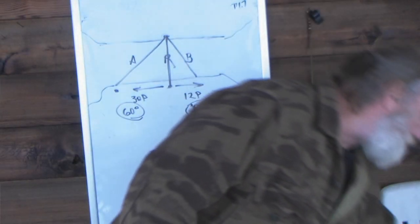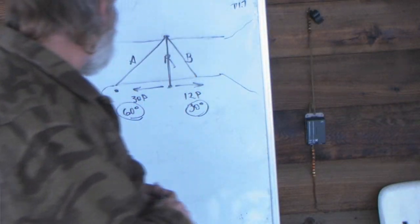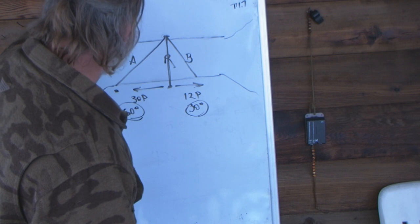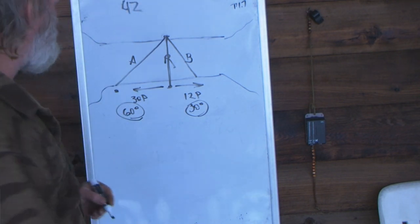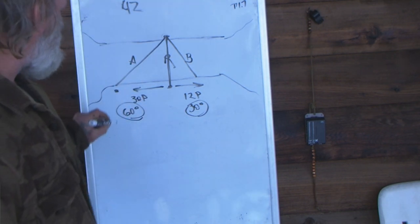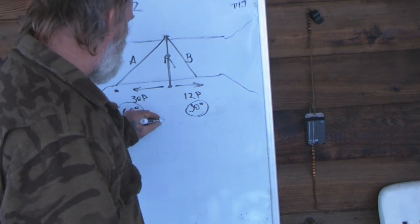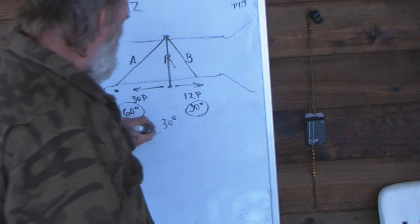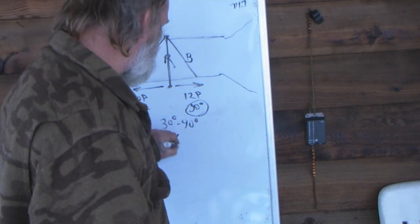So what we're going to do is we're going to add our total pace count, which is 42 in this case. 42 paces. Then what we're going to do is we're going to subtract these two degree readings from each other so that we get a value or a difference and the difference in this case is 30 degrees. 30 minus 60 equals 30. We're going to subtract that from 90 degrees and that's going to give us 60.